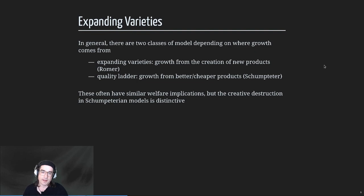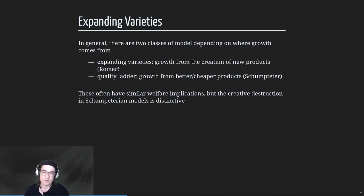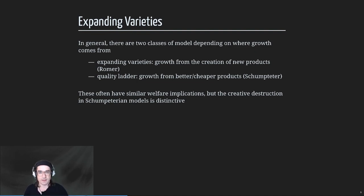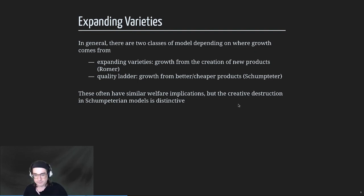There are a bunch of different types of models you can write down here. In the textbook, in Acemoglu, he has what he calls a lab equipment model - it's good because it gives you a really simple derivation of the outcome, but it doesn't seem very realistic. It goes a bit too far in making assumptions to induce simple outcomes. We're still going to be able to solve these models in closed form - they're a little bit trickier but still solvable.